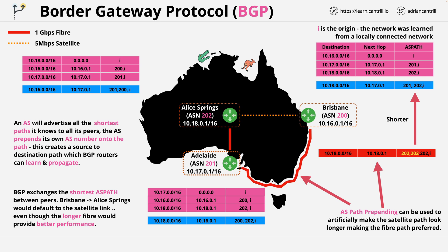BGP can be used to exchange routing information between autonomous systems, known as AS. Each site is allocated an AS number, or ASN, and it uses this to construct routing paths showing how to reach every site from every other. This works fine where there's only one path between ASNs, or only one exit point for each system. At this level, you'll need to understand how this can be enhanced, so let's look at local preference and multi-exit discriminator in turn.